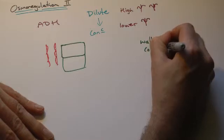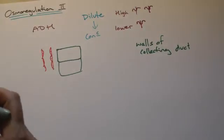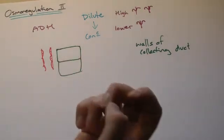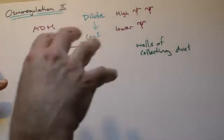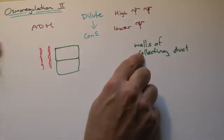But the problem is people then start using the word wall and talk about cell walls. Now animal cells do not have cell walls. So be careful. Although ADH acts at the walls of the collecting duct.